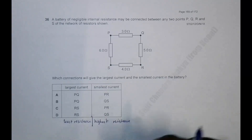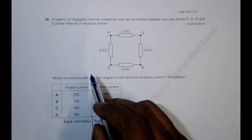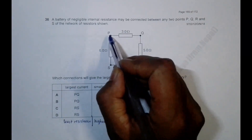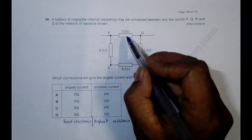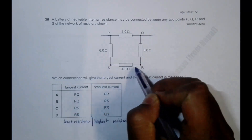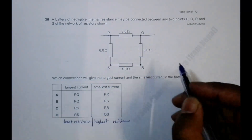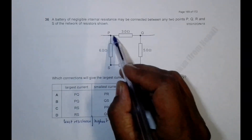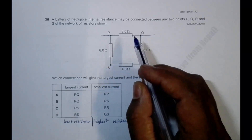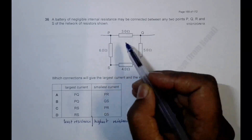First, let's find the least resistance. If I connect the cell across two points, we get resistors in parallel. In a parallel combination, the overall resistance is always less than the least of the two individual resistors. So any parallel combination will give a resistance less than the smallest resistor involved.